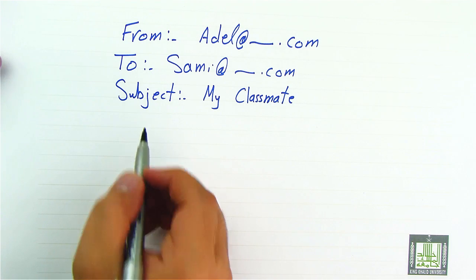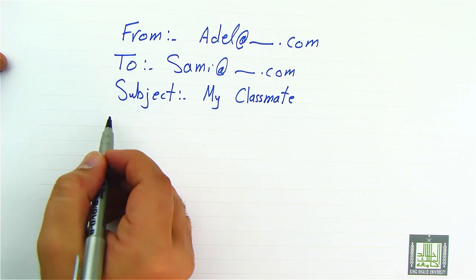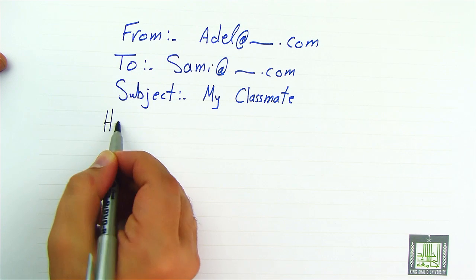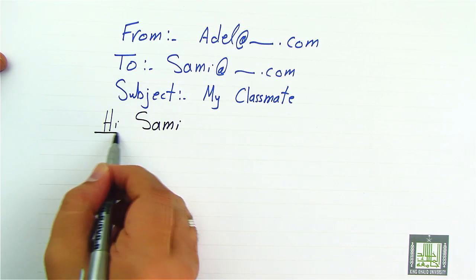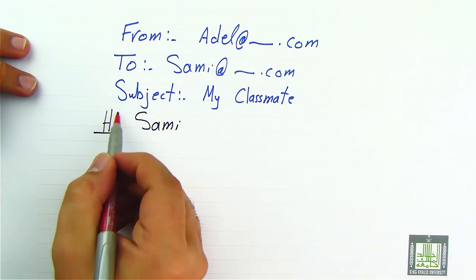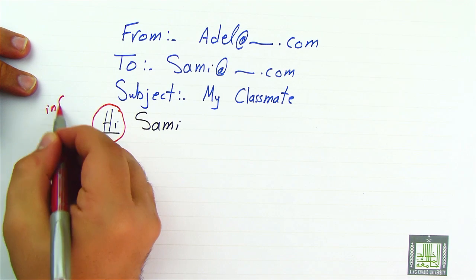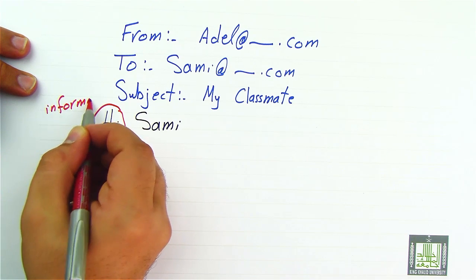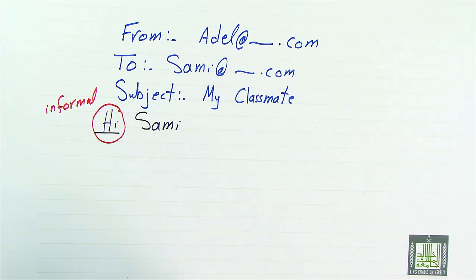Now we start usually with a greeting. We greet Sammy, so we say 'Hi Sammy.' We use 'Hi' because we are writing an informal email, and because there is an intimacy between me and Sammy.